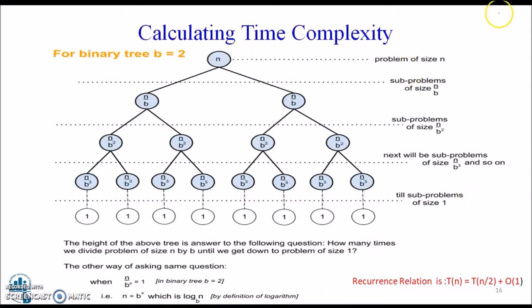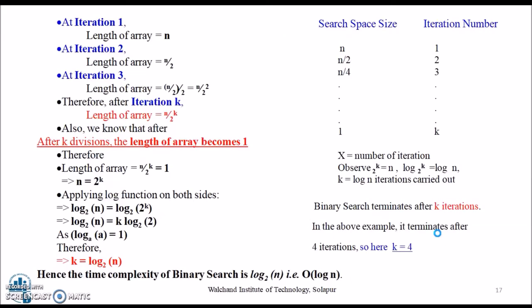The problem size n gets divided into subproblem size n/2 at each step until it reduces to 1. At each iteration, the array is divided into half. So let's say the length of the array at any iteration is n. At the first iteration, the length is n. At the second iteration, the length is n/2. At the third iteration, n/2². Therefore, at iteration k, the length of the array is n/2^k. After k divisions, the length of the array becomes 1.